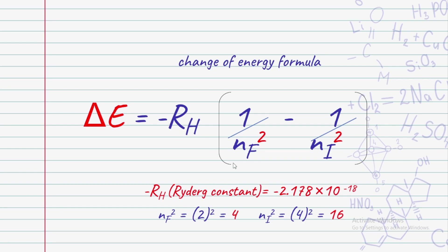The Rydberg constant value is minus 2.178 times 10 raised to minus 18.